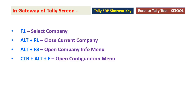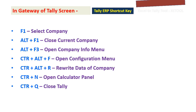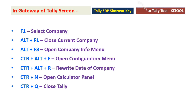Control Alt F: Open Configuration Menu. Control Alt R: Rewrite Data with Company. Control N: Open Calculator Panel. Control Q: Close Tally.